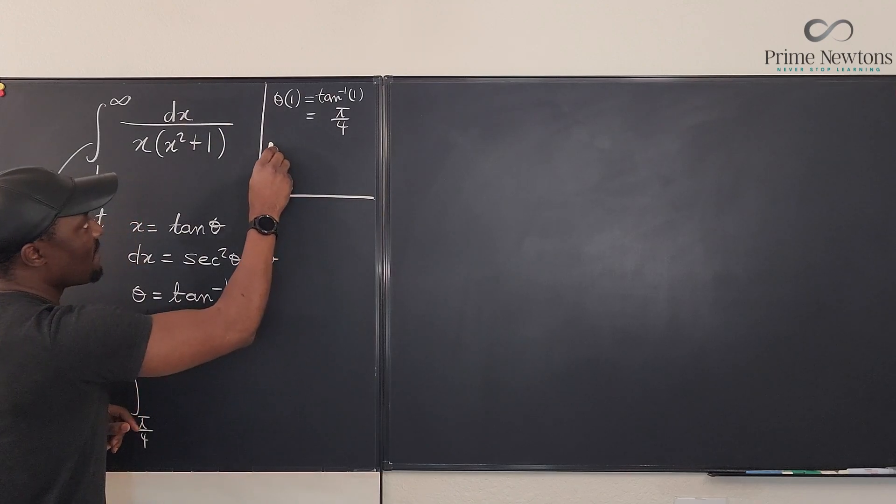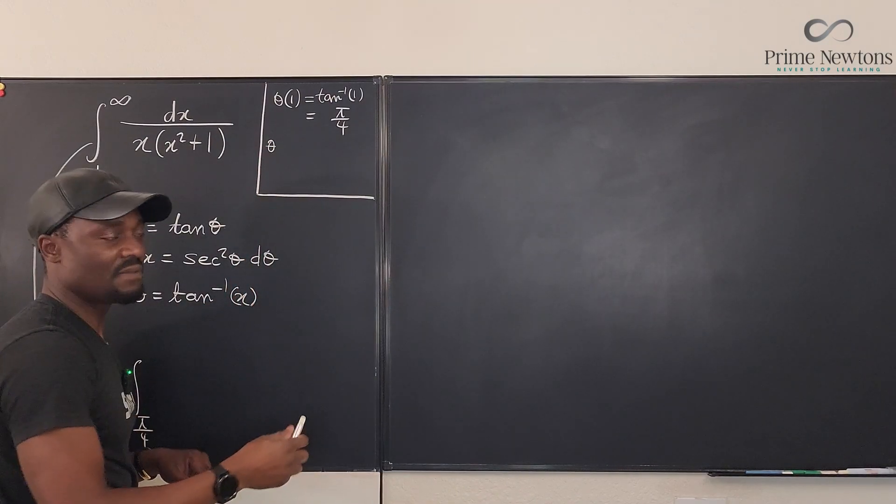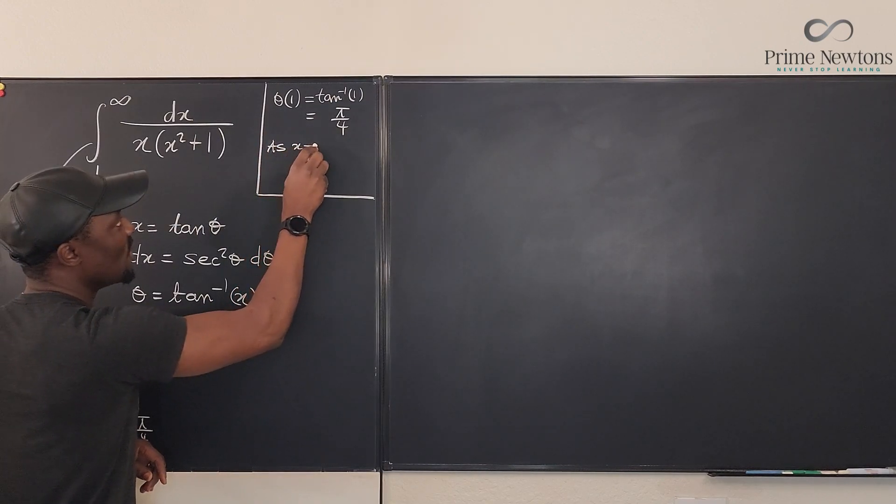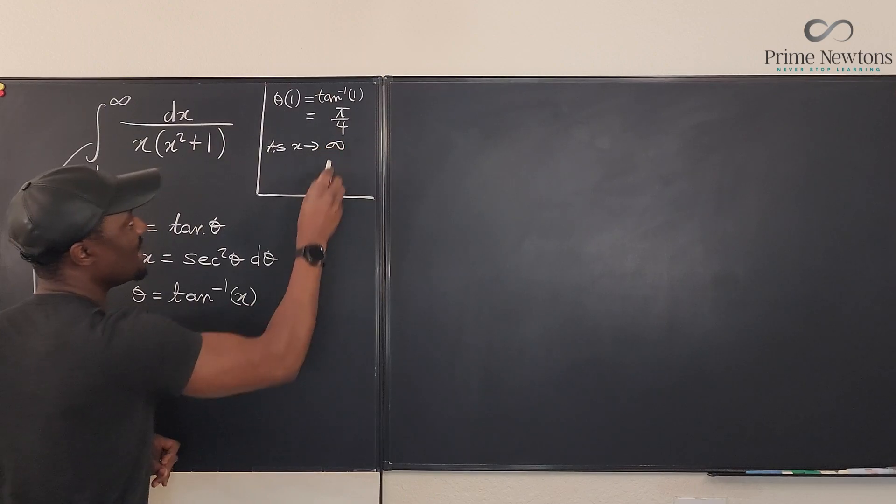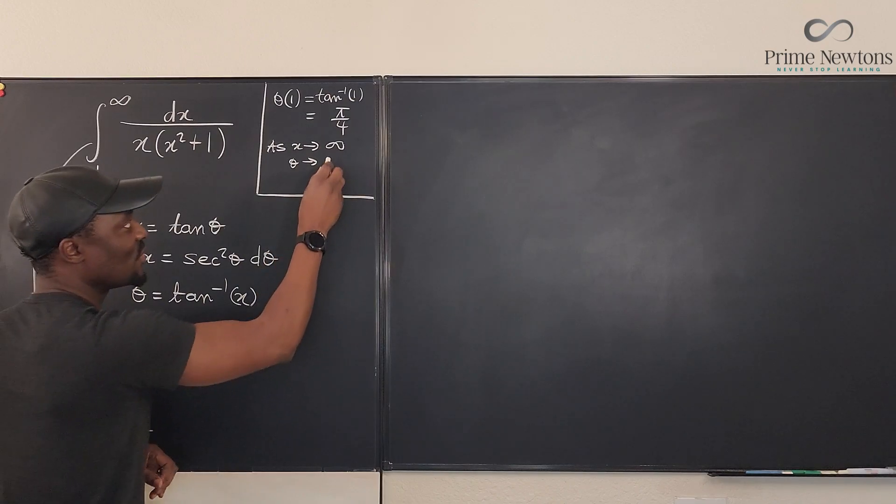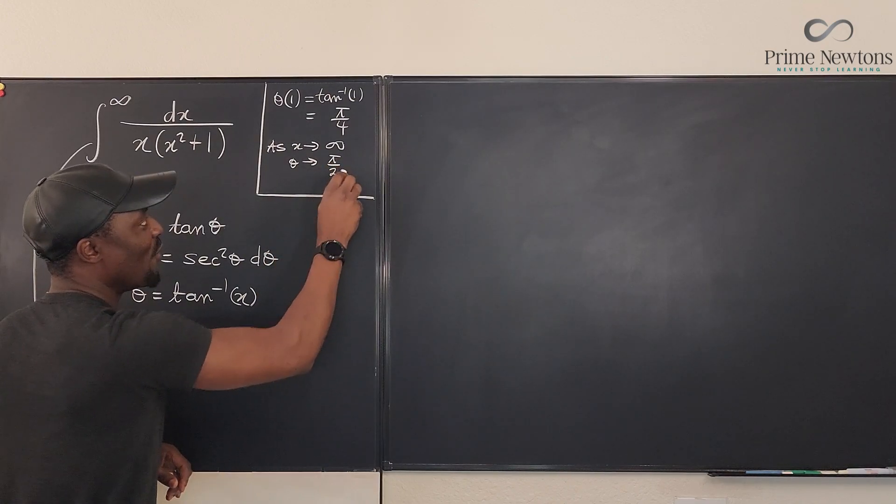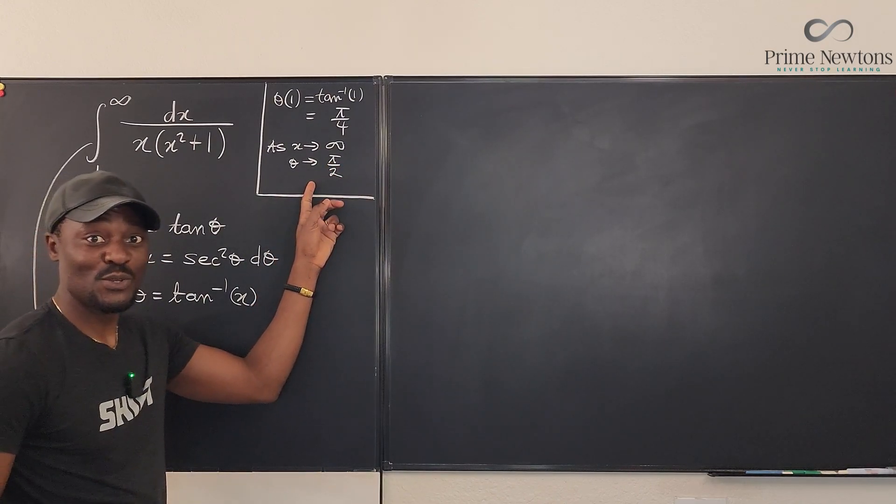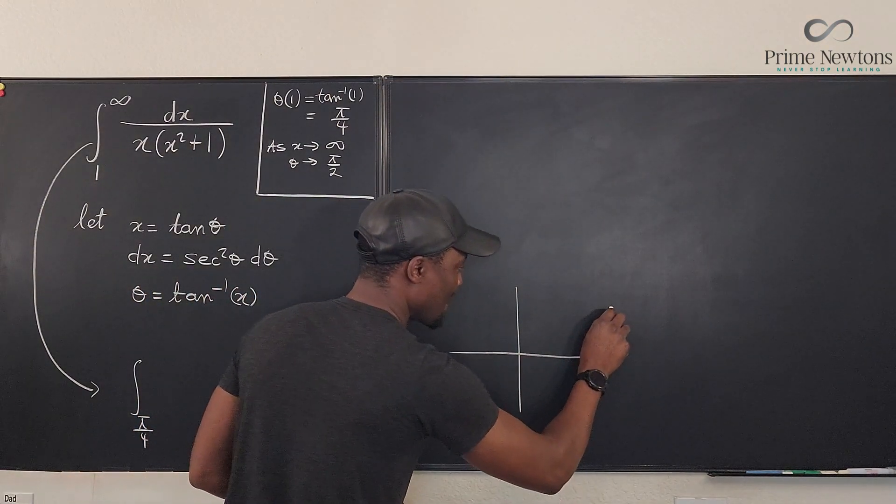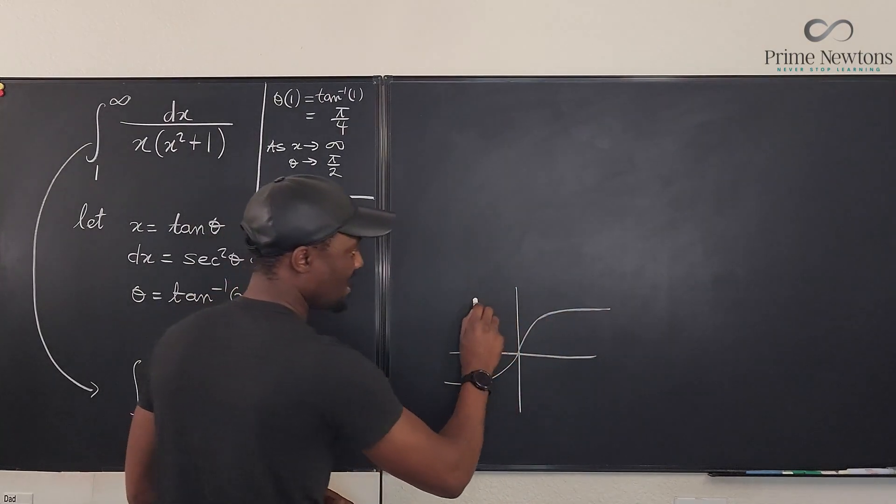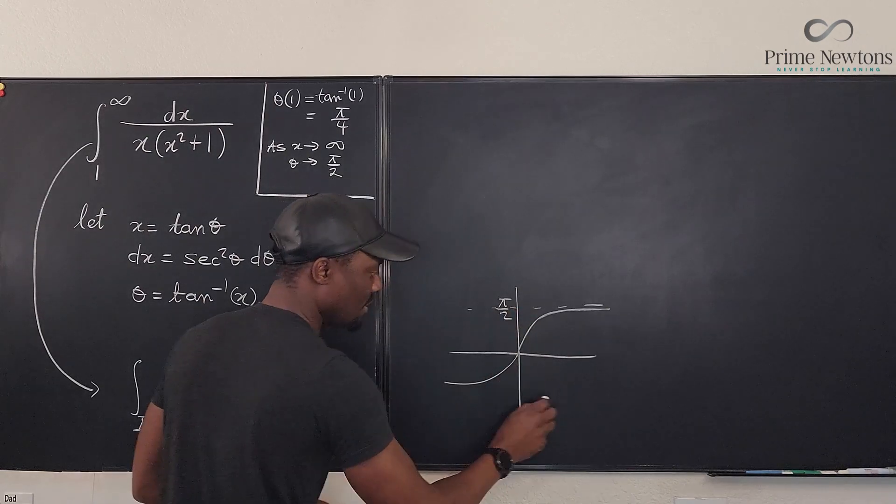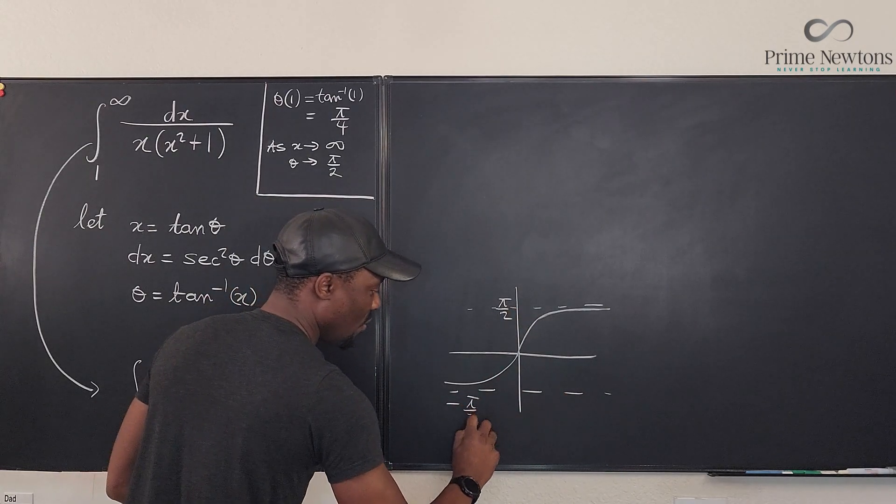The same thing. If we evaluate θ, we cannot plug in infinity. So what we're going to say is, as x goes to infinity, what's happening to θ? Θ is going to π over two. This one, you can only do from the graph of arctan. The graph of arctan goes this way, nicely. And this is a horizontal asymptote at π over two, and this one is negative π over two.